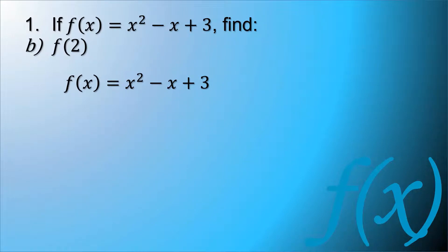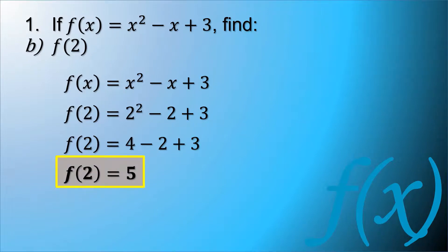Next, function of 2. Using the same equation, we'll substitute 2 for x. Function of 2 is equal to 2 squared minus 2 plus 3. Then, simplifying the 2 squared, which is 4 minus 2 plus 3. That results to the function of 2 is equal to 5.